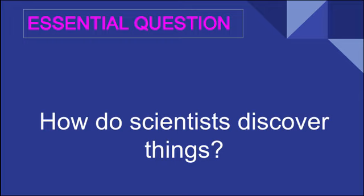This reading section's essential question is: how do scientists discover things? This should already be part of the notes you've taken on your reading homework. By the end of the section, you should be able to summarize the processes and characteristics of different kinds of scientific investigations.